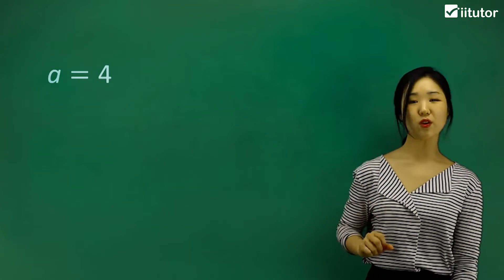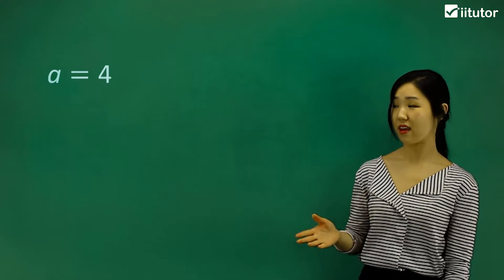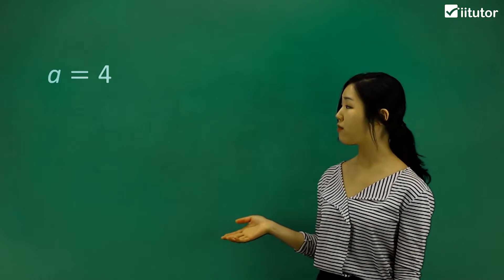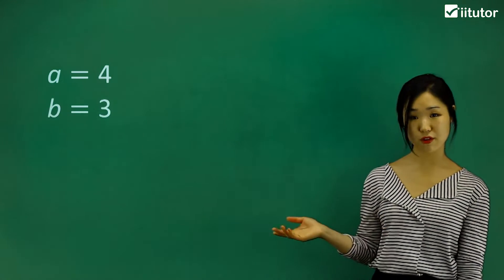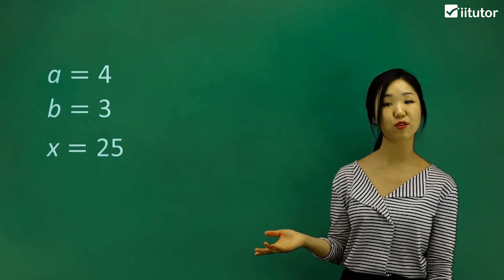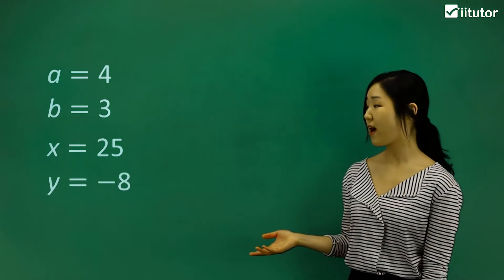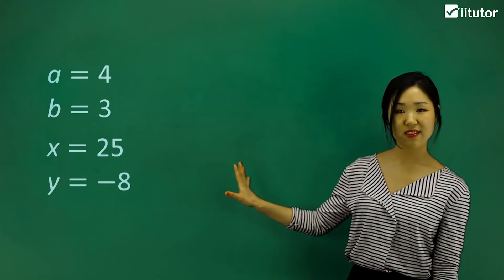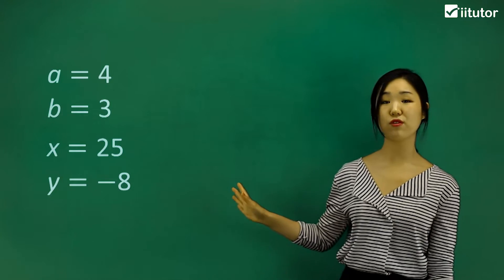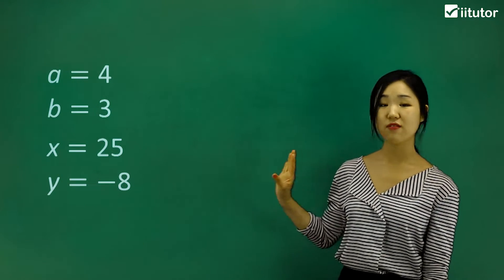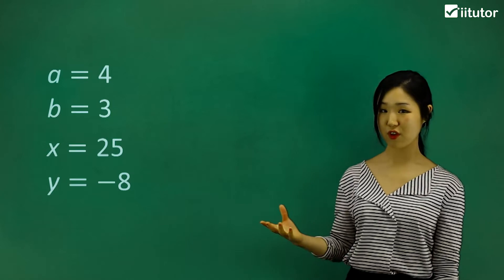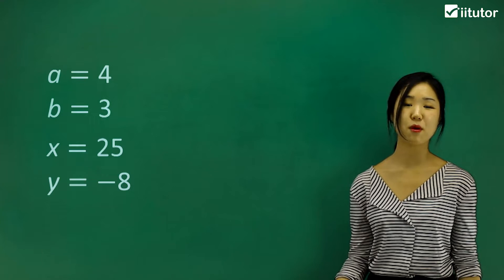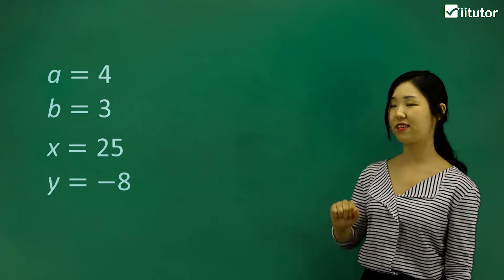I've got a equals 4 on the board. A certain question might give you the value of a, and say a is 4. They might also give you the value of another variable, like b — b could equal 3. Another one, x, x could equal 25. And y could equal minus 8 or negative 8. Specific questions give you the values of different variables, and you can substitute those values into the given algebraic expressions to finally come up with the simplified final outcome.